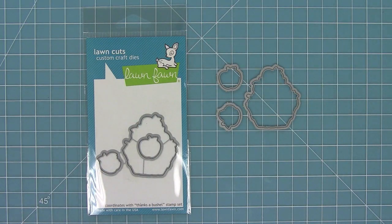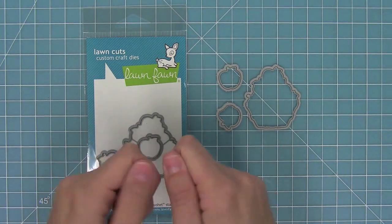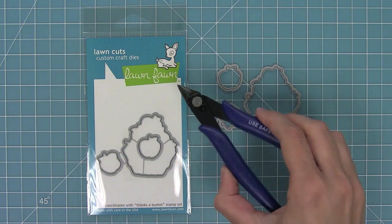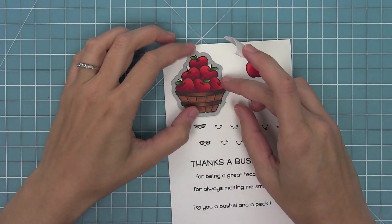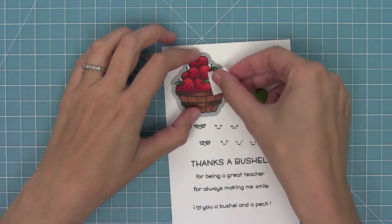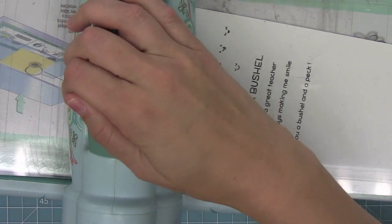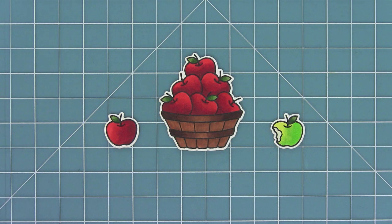Now here we have the coordinating dies for this set. You can bend them apart at the tabs or use your wire snips to separate them, then line them up with your stamped images. I like using post-it note tape to hold them in place while I run them through my die cut machine. I love how striking those red apples are with that awesome white border around them.